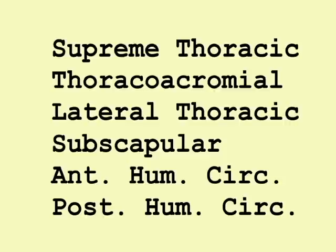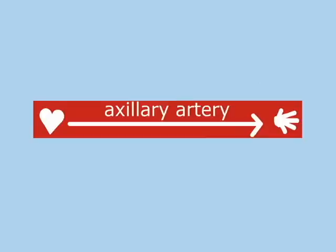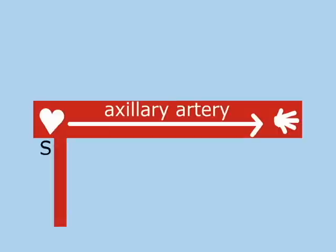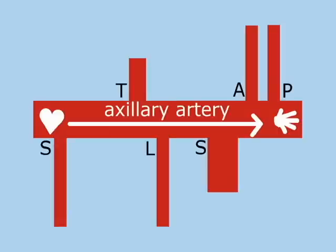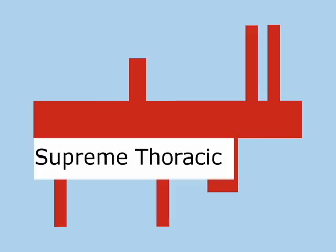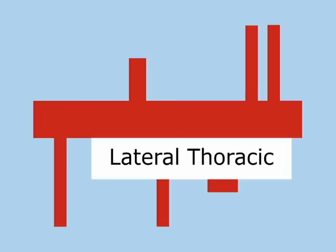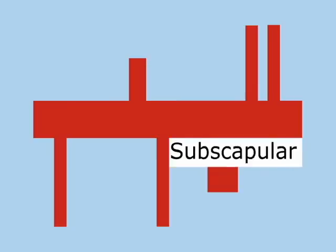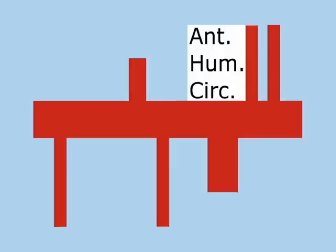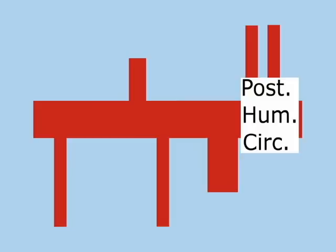Now that you know the names in order, you draw the branches directly off the axillary artery. The axillary artery gives off: supreme thoracic artery, thoracoacromial trunk, lateral thoracic artery, subscapular trunk, anterior humeral circumflex artery, and posterior humeral circumflex artery — '60s teens love sex and pot.'